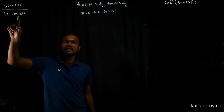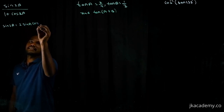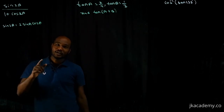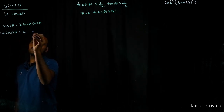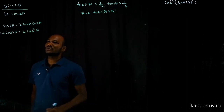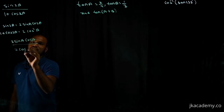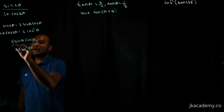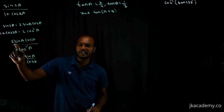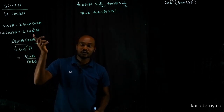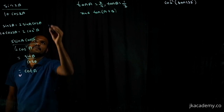Next question: sin(2a) / (1 + cos(2a)). We know sin(2a) = 2sin(a)cos(a), and 1 + cos(2a) = 2cos²(a). Substituting: 2sin(a)cos(a) / 2cos²(a). The 2's cancel, and one cos(a) cancels, leaving sin(a)/cos(a), which is tan(a). That's the solution.